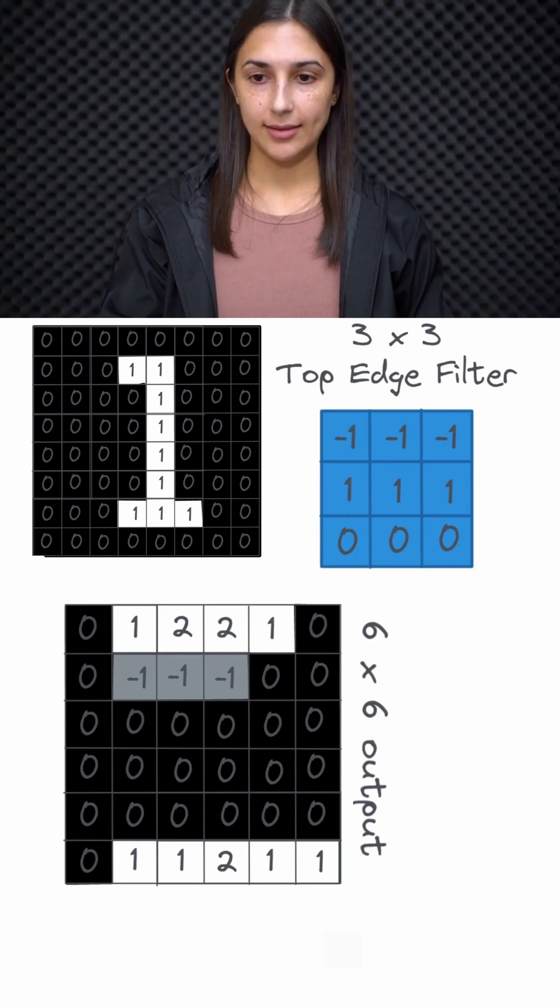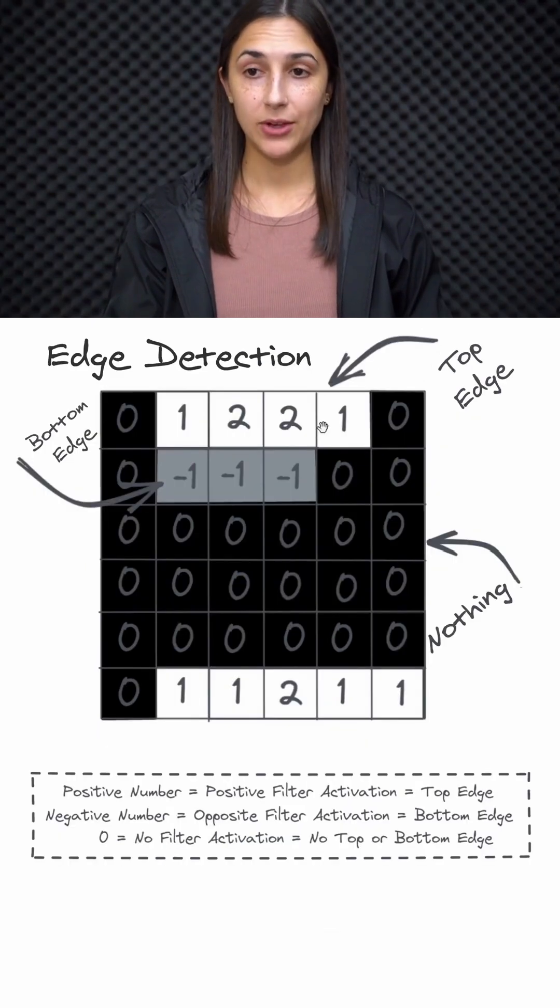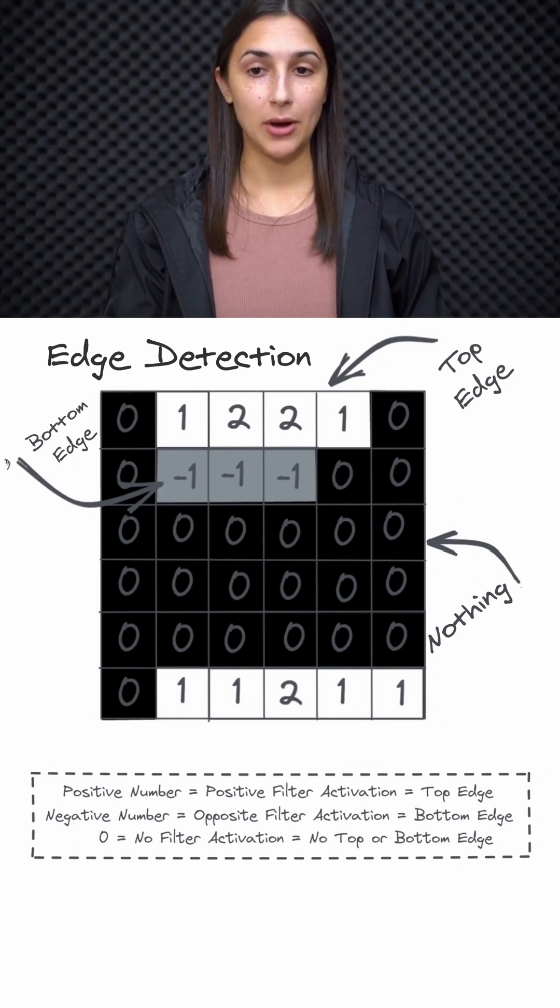We actually have this diagram exemplifying this here. So where we have the positive values, as we said, that is indicative that the filter detected a top edge. Negative values in the output are indicative that the filter detected a bottom edge in the input. And where we have zeros, we have the filter detecting no top nor bottom edges in the input.